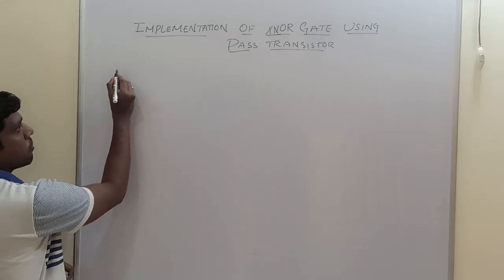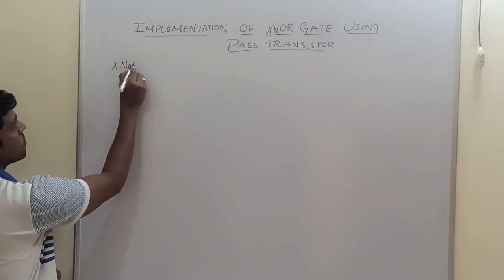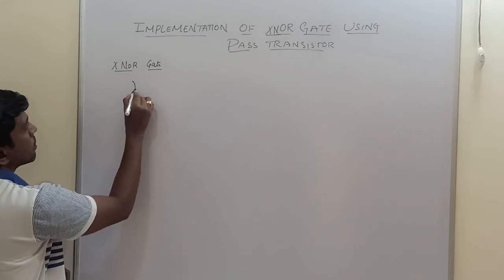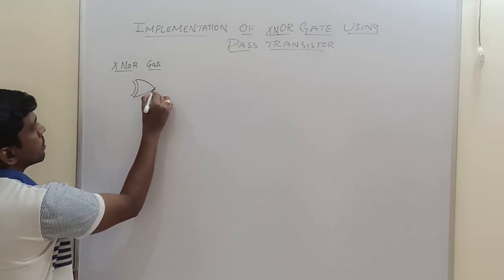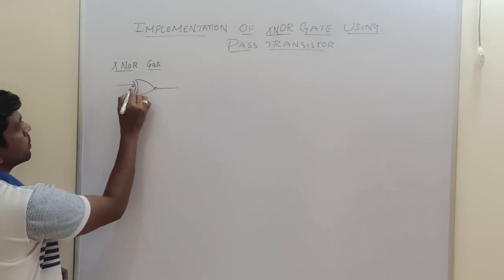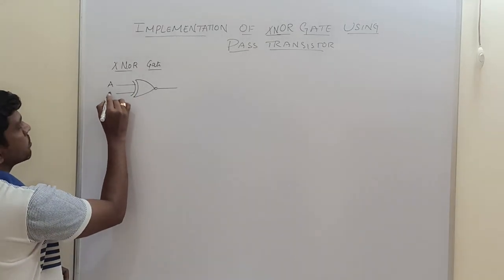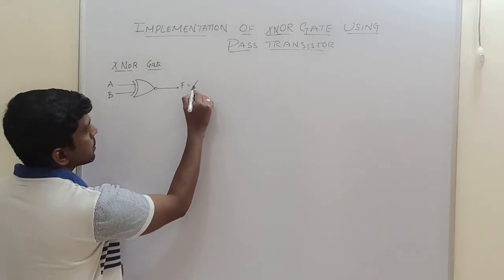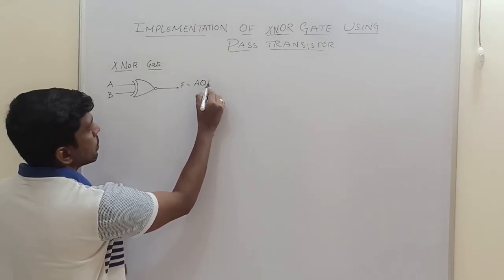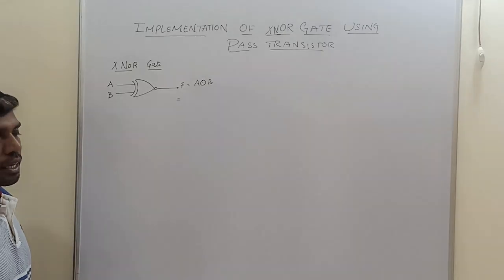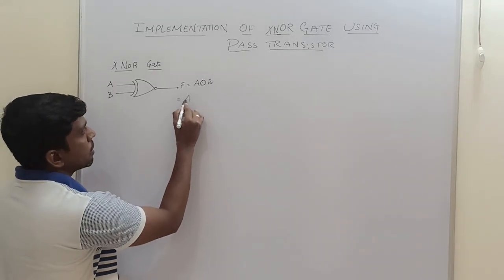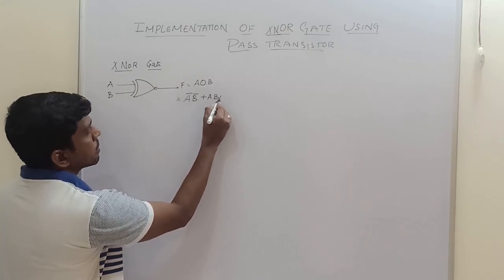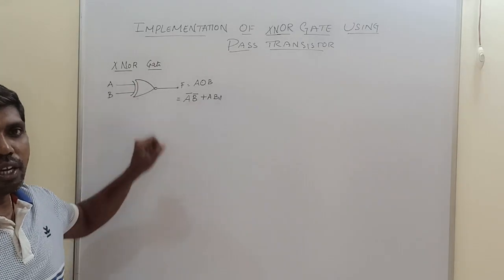First, I draw the symbol of XNOR gate. It has two inputs, namely A and B, and the output is F. The corresponding boolean expression is A XNOR B. The elaborated expression is A̅B̅ + AB. This is the elaborated boolean expression for XNOR gate.